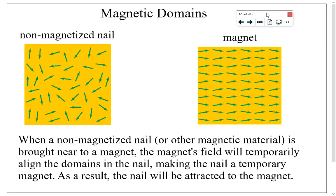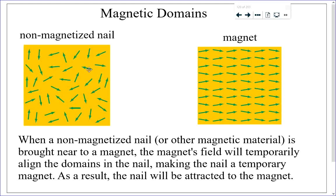Now moving into magnetism and magnetic domains. A magnet is a magnet because inside it are microscopic magnets called domains that are all lined up. In an unmagnetized nail, domains are randomly oriented. Bringing a magnet near the nail aligns the domains, making the nail temporarily behave like a magnet and become attracted to it.